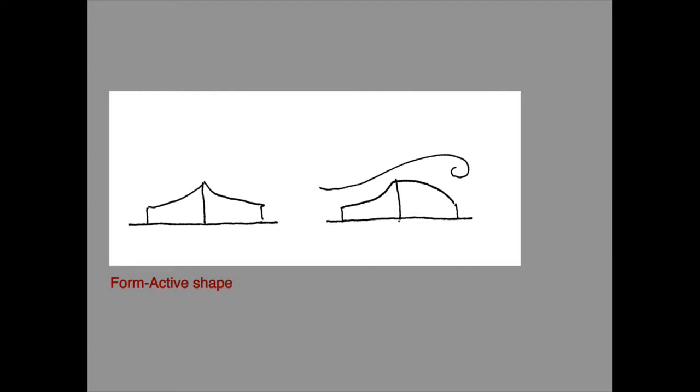The same thing can be observed in, for example, a tent, which is made from flexible canvas material. On calm days, this is subjected only to gravitational load and has a characteristic shape. On windy days, the additional pressure loads cause the tent to adopt a different shape so as to maintain the axial internal force condition in the canvas envelope. This is a new form active shape caused by a change in load condition.